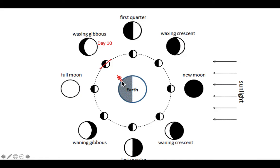This man is now standing at about 9 p.m. and he looks up and he still sees bright on the right, but this time more than half of the moon is lit up. This is called a waxing gibbous. This is what it would look like from him standing on the ground — a little more than half is bright, lit up by the Sun. This is about day ten.